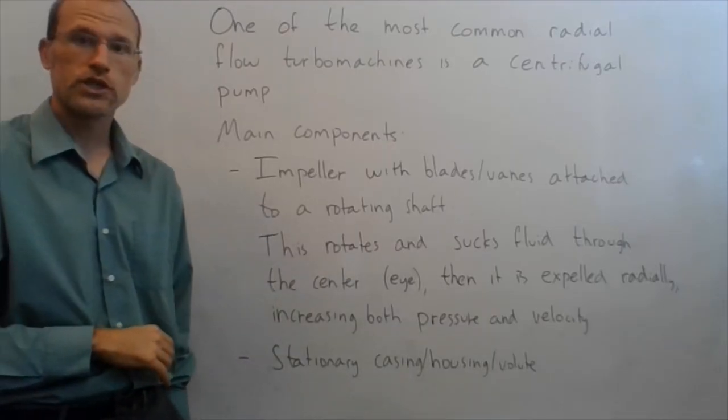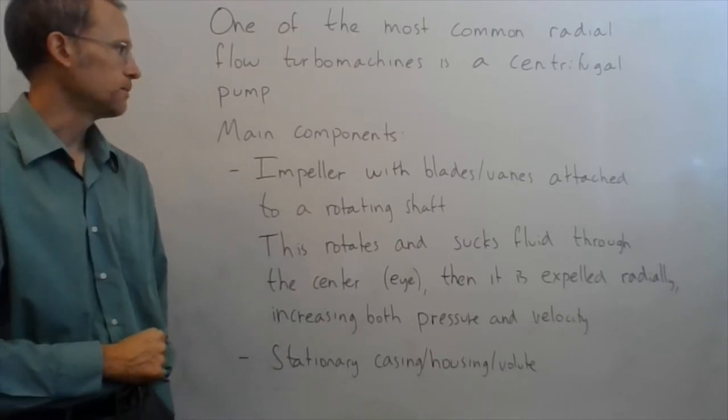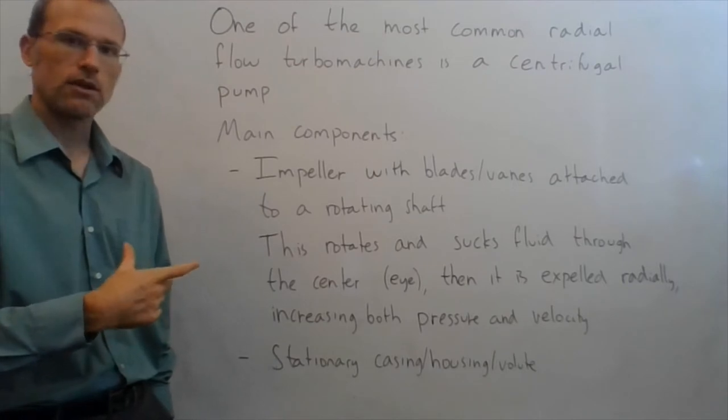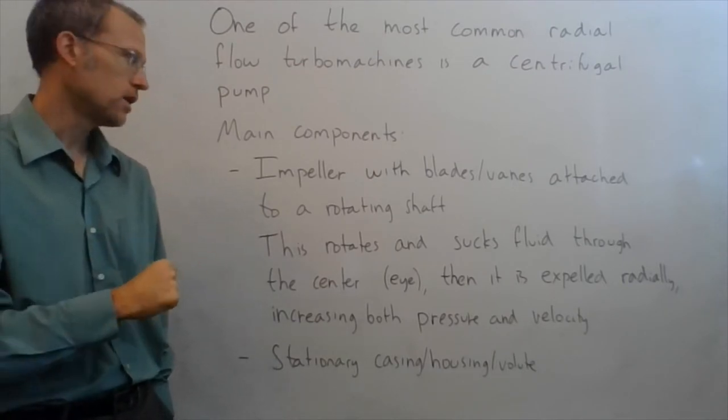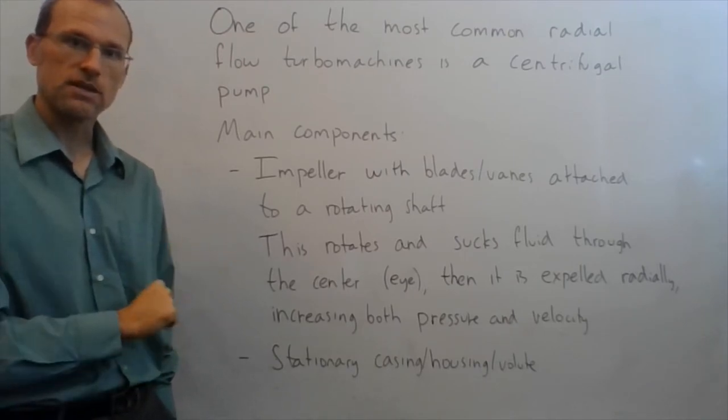One of the most common radial flow turbo machines is a centrifugal pump, so we deal with those a lot. The main components of a centrifugal pump is its impeller, so that's the thing on the inside that rotates around, has blades or veins attached to it to spin the fluid past the rotating shaft, so the power goes in to shaft spin this thing around.